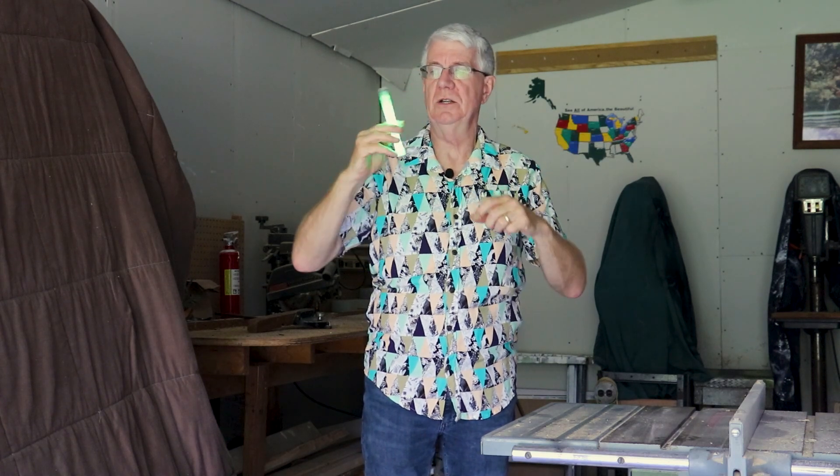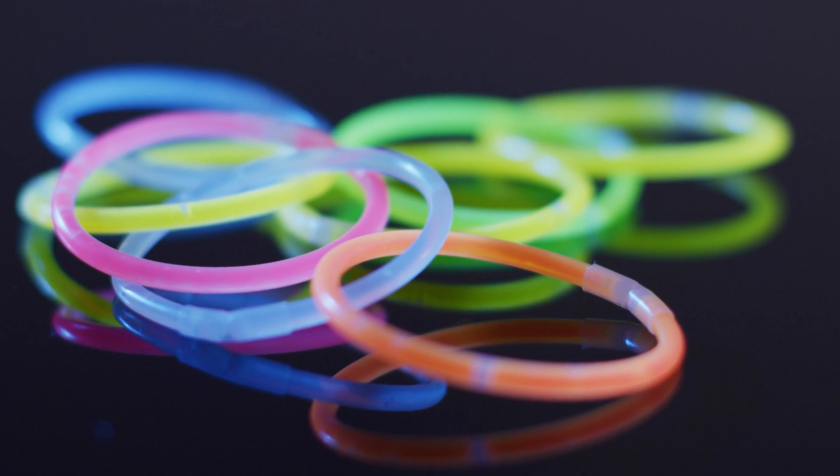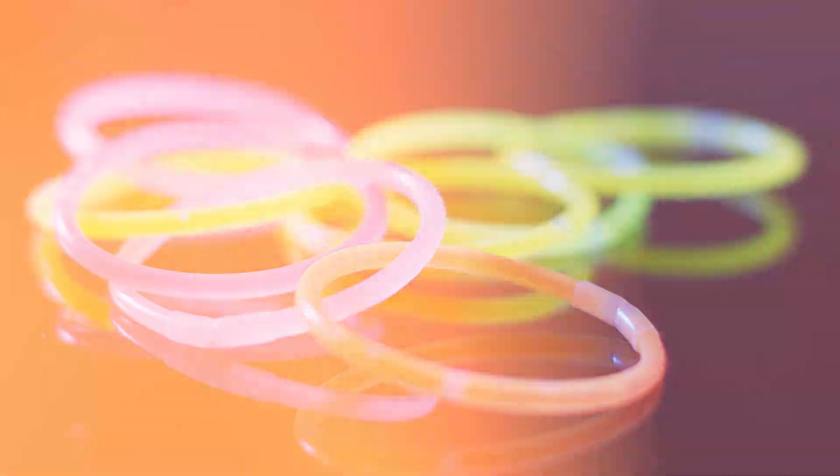When we break these light sticks, all of a sudden a bright light of a certain color comes out. Now depending on the chemical variation, you might get blue light or green light or yellow light or orange light. This one happens to be green and it puts out a significant amount of light and lasts a long time.